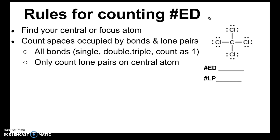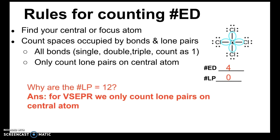CCl4. We find our central atom, which is the carbon in the middle, and count the spaces occupied by bonds and lone pairs: one, two, three, four. So this has four electron domains. Now let's determine how many lone pairs this structure has — zero. You may wonder why there aren't 12 lone pairs. Remember, for VSEPR we only count lone pairs on central atoms. If we were applying the octet rule we'd count lone pairs on terminal atoms too, but for VSEPR it's only lone pairs on central atoms.